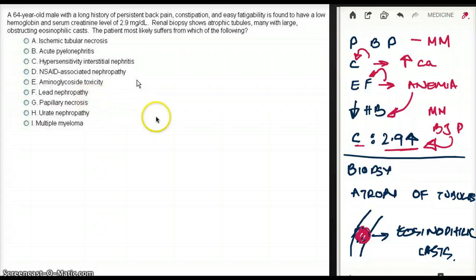Lead nephropathy, again, does not cause these symptoms. Papillary necrosis, not seen in this case. Urate nephropathy, not seen with these kind of constellation symptoms. So, ultimately, we're left with multiple myeloma.